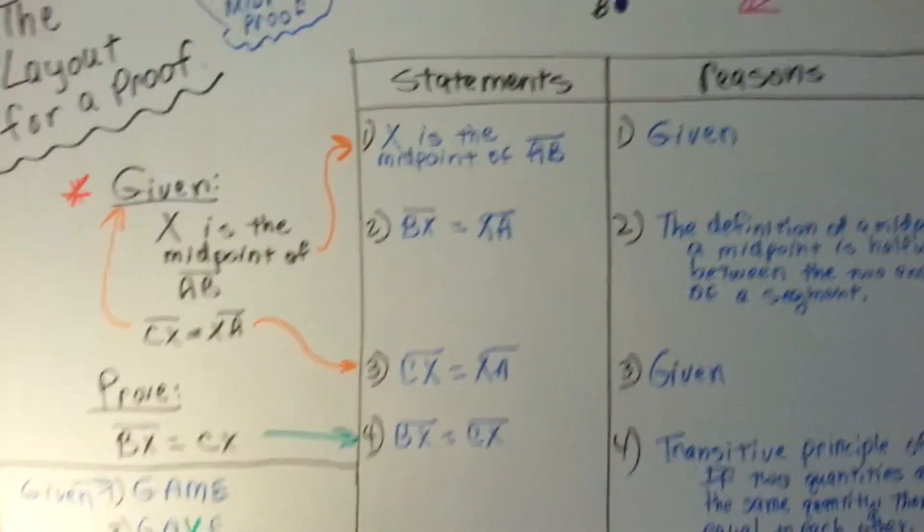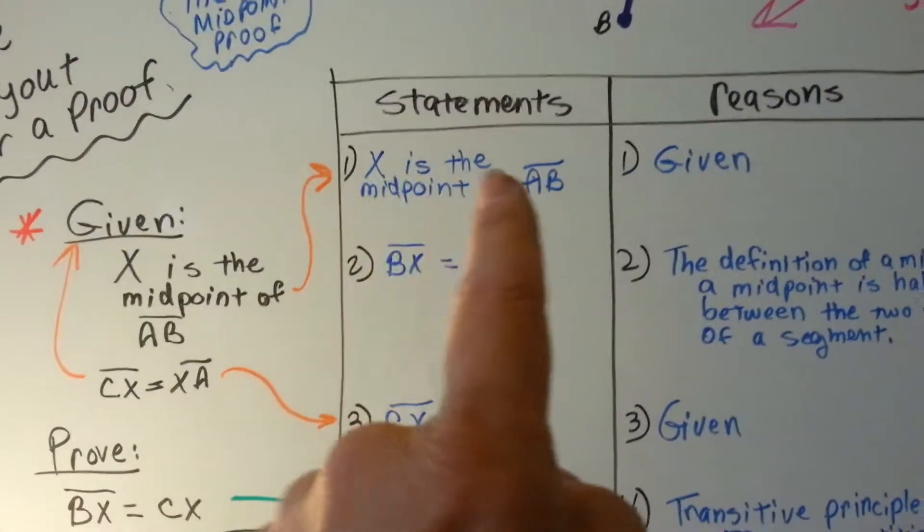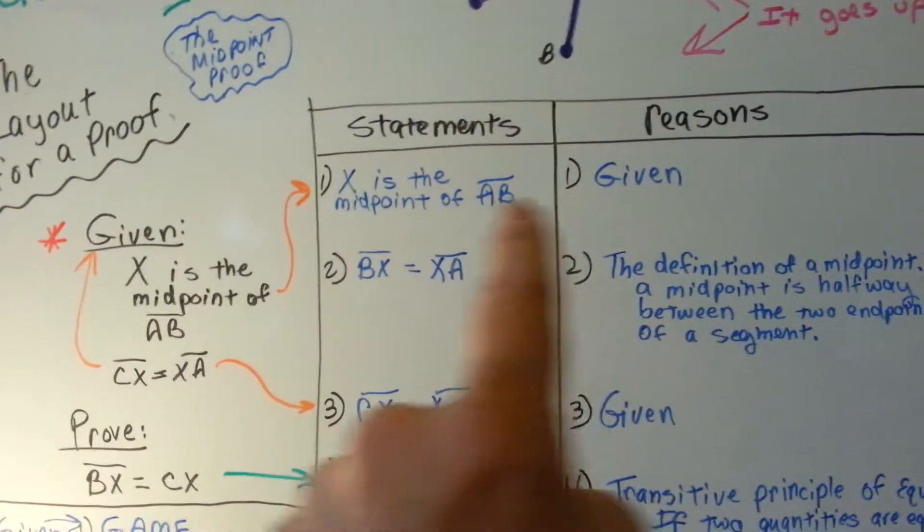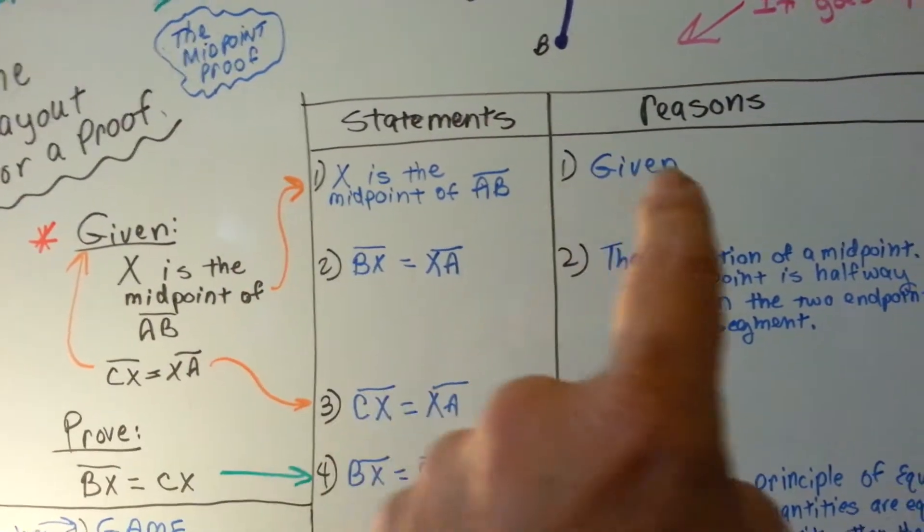So, here's our first thing we do. x is the midpoint of AB. That is given. So, we put that up there first.